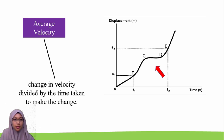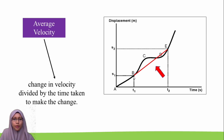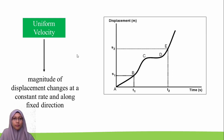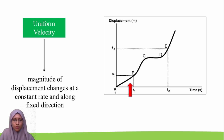On the other hand, average velocity is the change in displacement divided by the time taken. To find the average velocity from time t1 to t2, we draw a line from point B to point E. The gradient of this line equals average velocity: (s2 minus s1) divided by (t2 minus t1). Uniform velocity means the magnitude of displacement changes at a constant rate in a constant direction. In this example, uniform velocity is from point A to B, where the gradient of the displacement-time graph is constant.